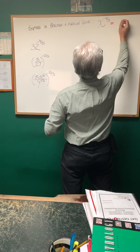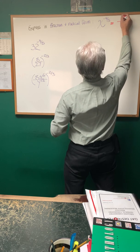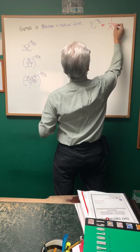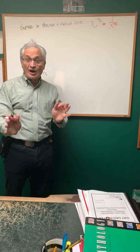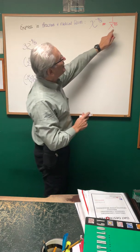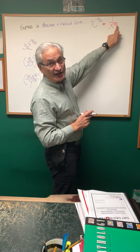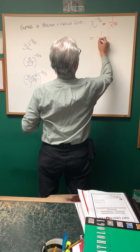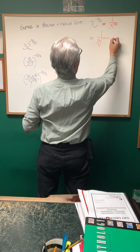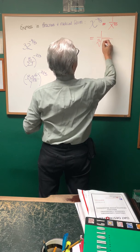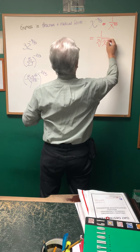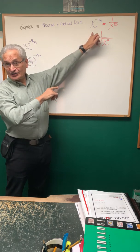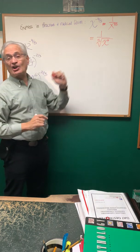First, we're going to follow the negative sign and take the reciprocal. This gives us one over x to the four-fifths power. We've followed one of the three instructions in the exponent. Now we're going to follow the instruction in the denominator — take the fifth root. So we leave it in the denominator, take the fifth root of x to the fourth. So expressed in fraction and radical form, x to the negative four-fifths power — there's our answer.